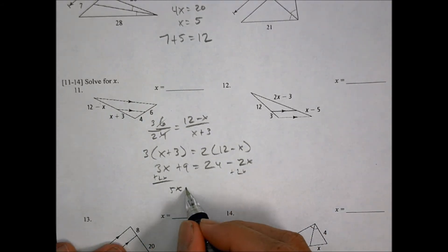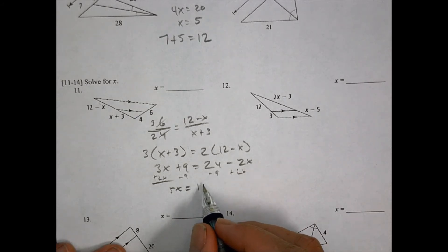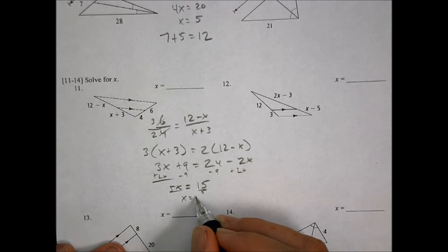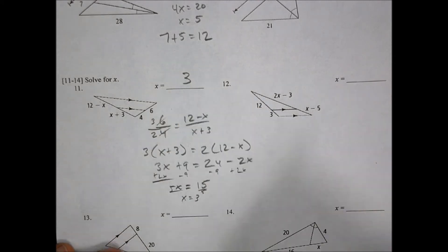We're going to add 2x to both sides, end up with a 5x. We're going to subtract 9, subtract 9, so 5x is going to equal, in our case here, 24 minus 9 is a 15. Divide both sides by 5, and x equals 3 for number 11.